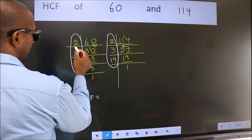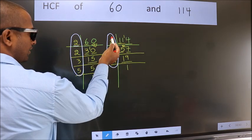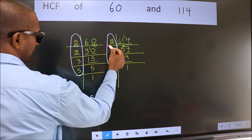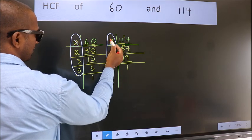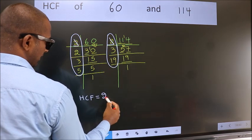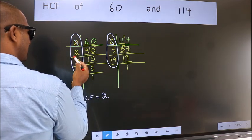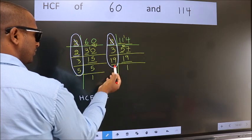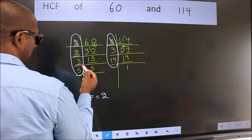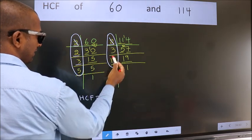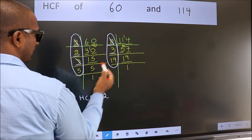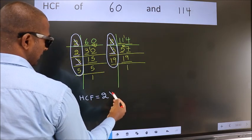Starting with the number 2. Do we have 2 here? Yes. So cut 2 right here. Next number 2. Do we have 2 here? No. Next number 3. Do we have 3 here? Yes. So cut 3 right here.